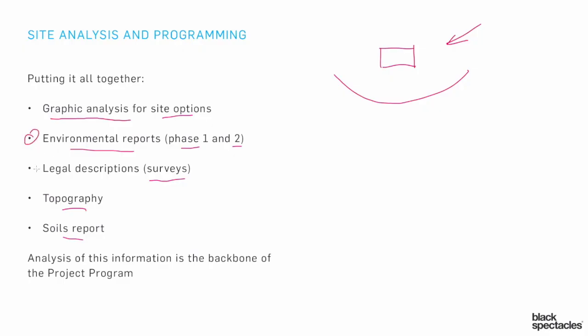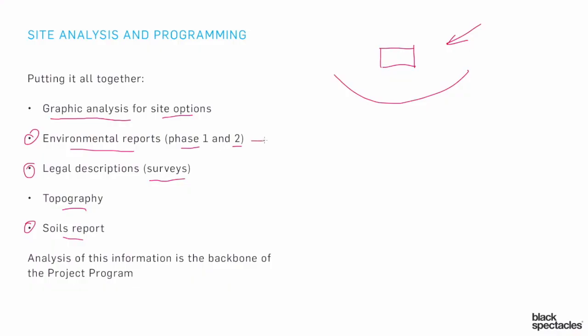A quick reminder: a bunch of this information — the environmental reports, the legal surveys, the soils report — these are all given to you by the owners, the clients. When they sign the typical contract with you, they're required to provide that. They're giving you the site and the information for the site, and it's important from a liability standpoint that it falls within their responsibility. Each of these things — the environmental report and the soils report — will come with recommendations. It's not just data; it's data with a proposal of what they think you should do.